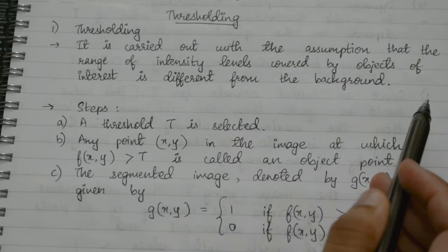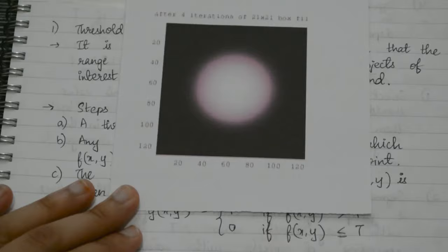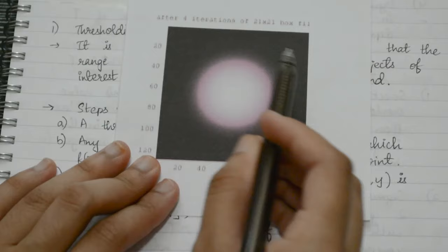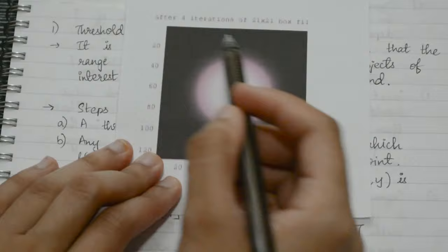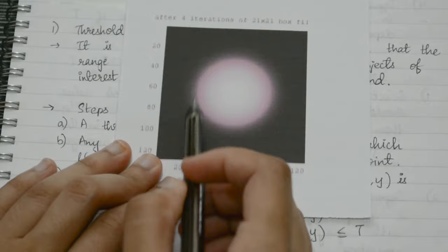What does this mean? Suppose if we have an image, you can see the object is of very high intensity and the background is of low intensity. This is what it means: whenever we do thresholding, either the object should be very light and the background should be dark, or the object should be dark and the background should be light. So that is the prerequisite.